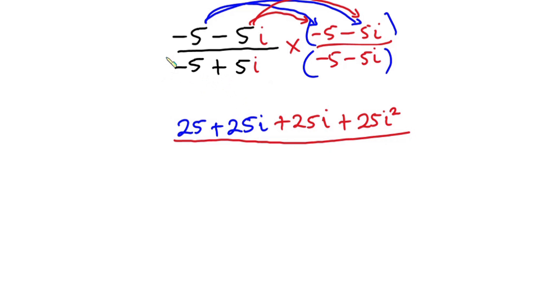Now let's focus on the denominator. You can see that from here we have negative 5 plus 5i and here we have negative 5 minus 5i. If you have a squared minus b squared, this is the same as a plus b then a minus b. So these are the factors of this difference of two squares.